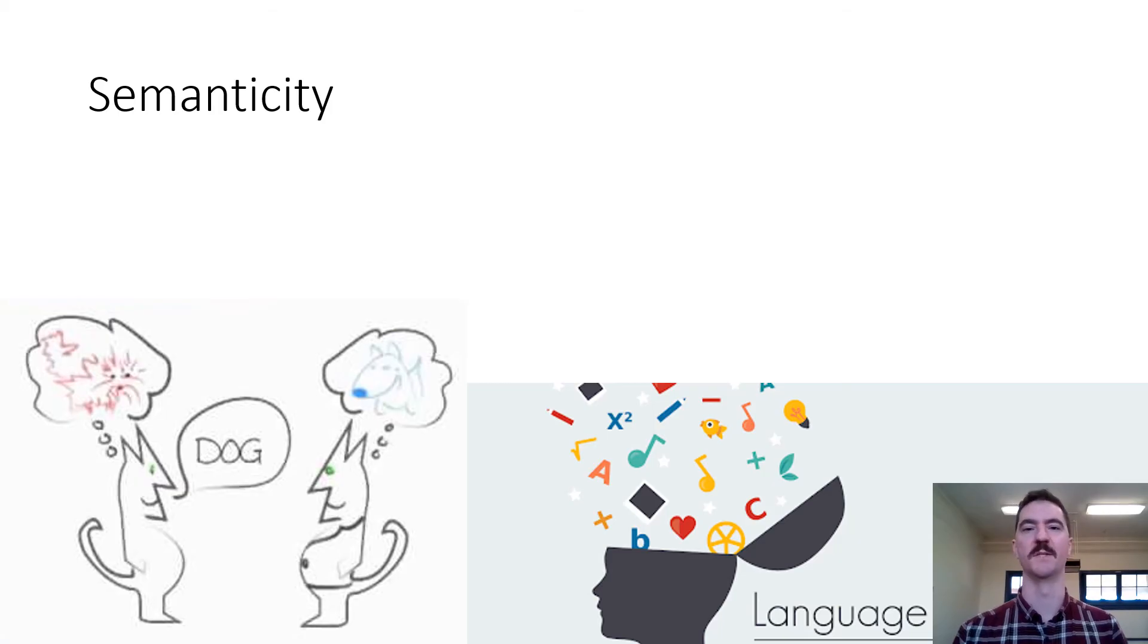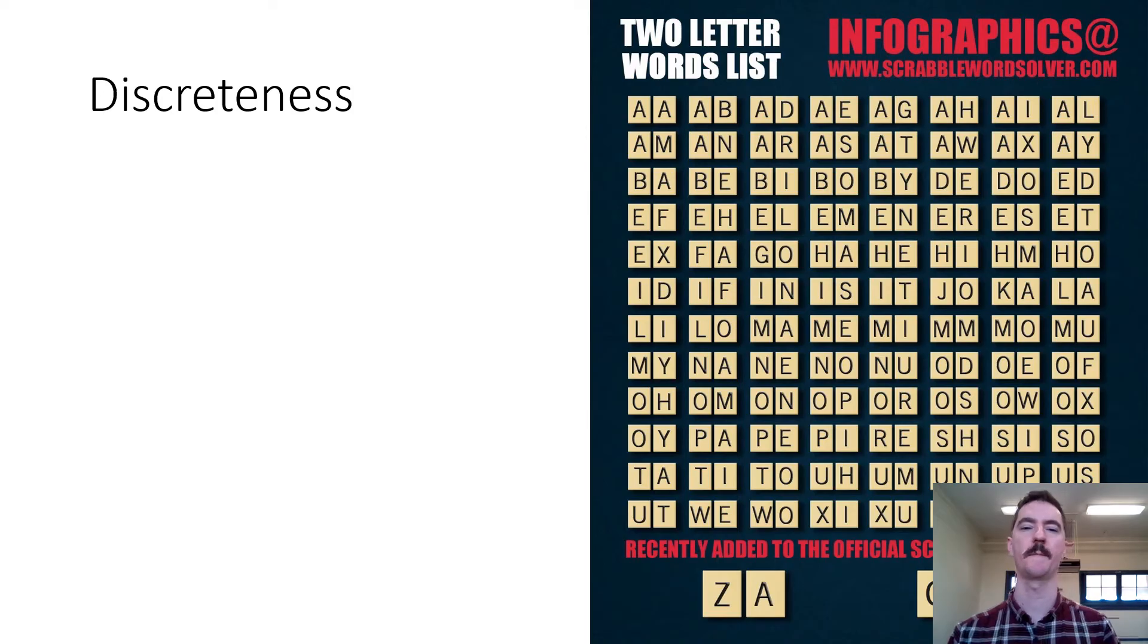Semanticity basically means that words have meaning. Symbols, the words, the letters, the sounds have meanings, simple as that. Discreteness: the language is made up of small little bits that you can mix and match and jumble up and do in different ways. We've got here the Scrabble two-letter word list. Using just these, I'm sure there's hundreds of thousands of words that you could produce using these discrete little tools.